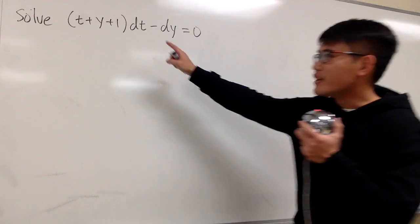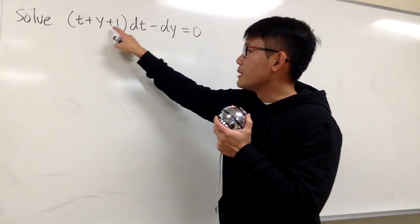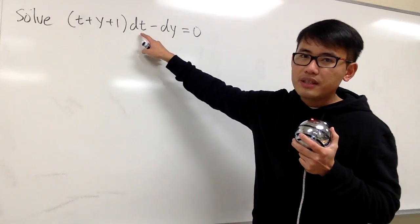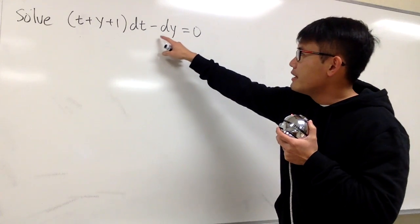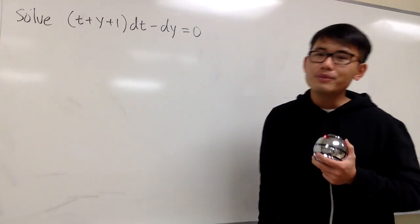Let's solve this differential equation. We have the parentheses with t plus y plus 1 inside, and then we multiply with dt, and then we minus dy, and this is equal to 0.